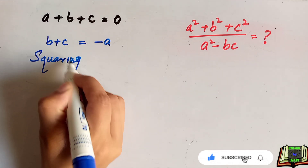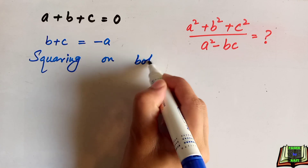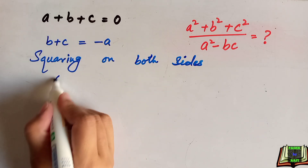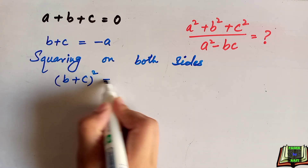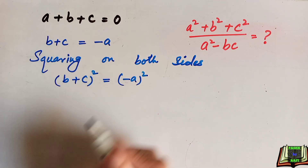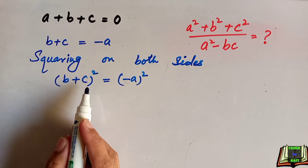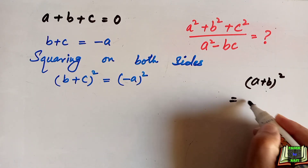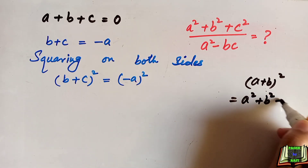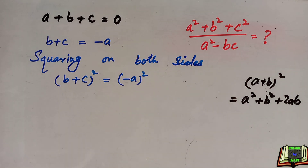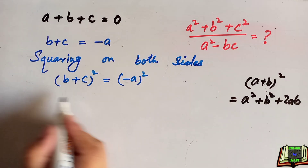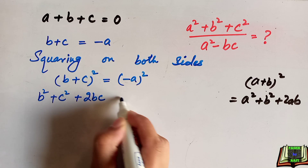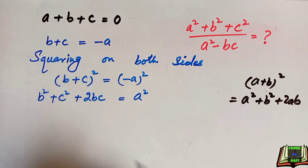Now squaring both sides of this equation, we get (b plus c)² equals (minus a)², which equals a². To solve (b plus c)², we will use the formula (a plus b)² equals a² plus b² plus 2ab. Applying the same formula here: b² plus c² plus 2bc equals a².